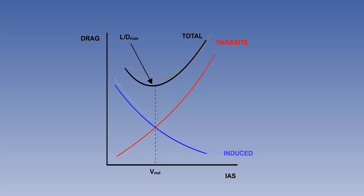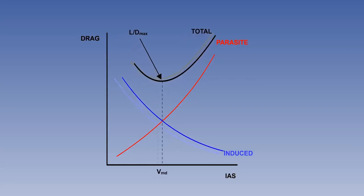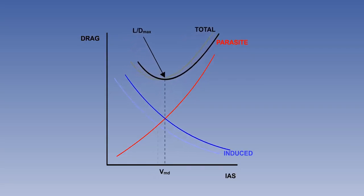If the aircraft is operated at a higher weight, the curve moves up and to the right, as a result of the greater induced drag, and VMD occurs at a higher IAS.